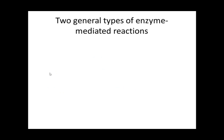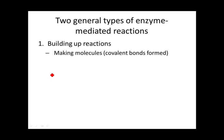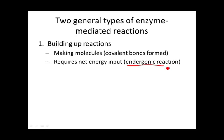Now let's talk about the two general types of enzyme-mediated reactions. The first is building-up reactions, when molecules are being made and covalent bonds are being formed. Covalent bonds hold energy and require energy to be made, so these building-up reactions require energy input — they're called endergonic reactions. 'Endo' means in and 'gonic' refers to energy, so energy is going in. We've seen these as dehydration synthesis reactions, used to assemble monomers into carbohydrates, proteins, and nucleic acids.